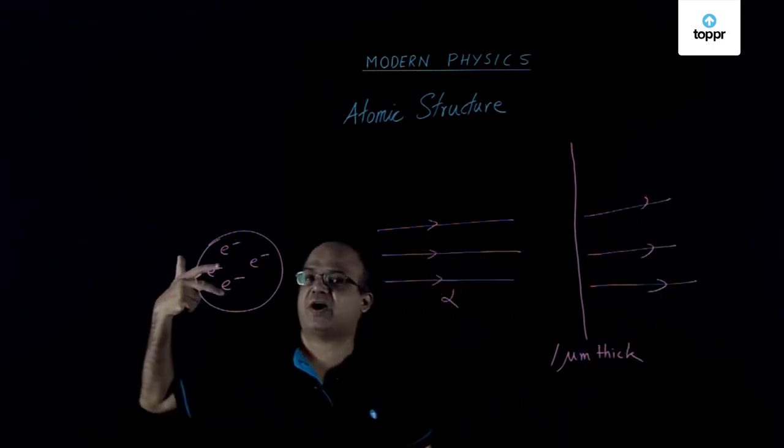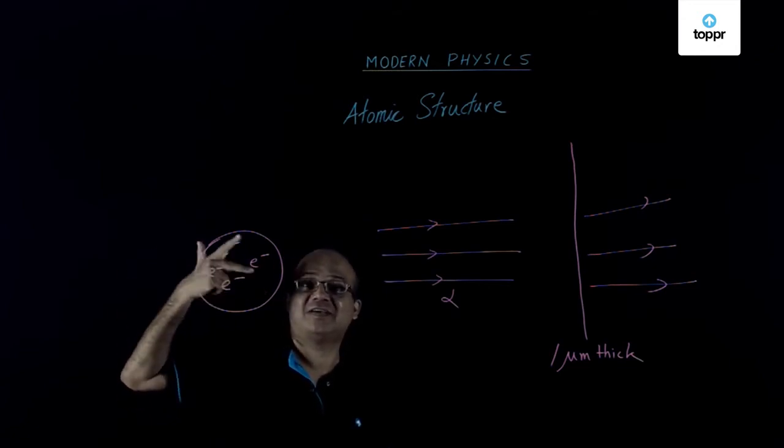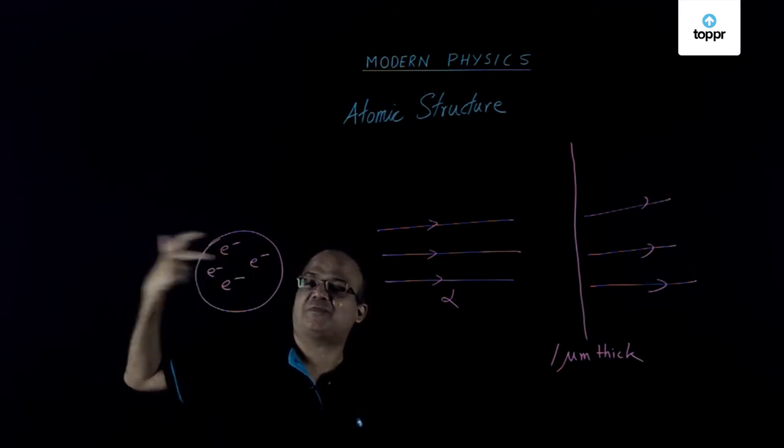So this model of atom failed. If this kind of solid spheres are there then the alpha particles cannot pass through that.